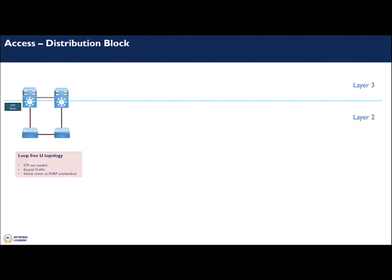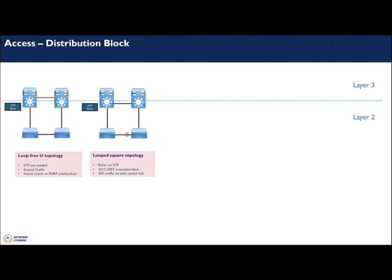Now let's look at the access-distribution block, which can be quite complex because there are different ways to design it. One challenge is that it will be Layer 2, meaning we have to rely on Spanning Tree Protocol. The first option is a loop-free U topology — there are no Layer 2 loops, so spanning tree is not strictly required, though it is still recommended.